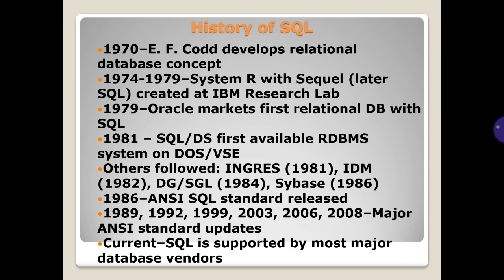History of SQL. 1970: Codd develops the relational database concept. 1974. 1978: System R with SQL created at IBM Research Lab. 1979: Oracle markets the first relational DB with SQL. 1981: SQL/DS as first available RDBMS system on DOS/VSE. Others followed.